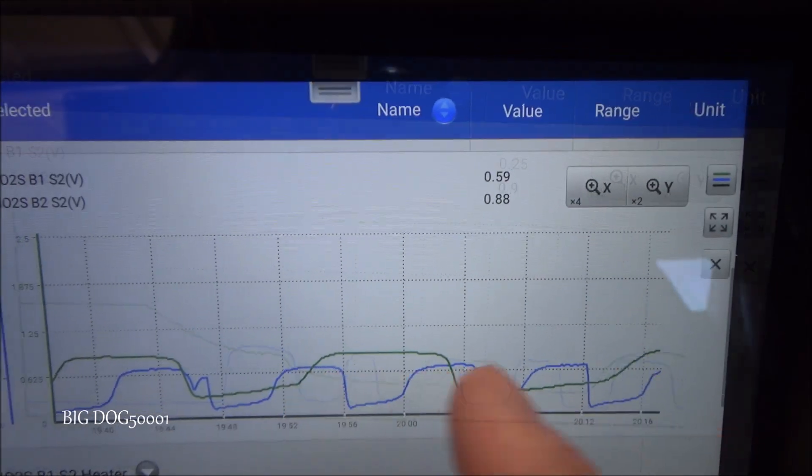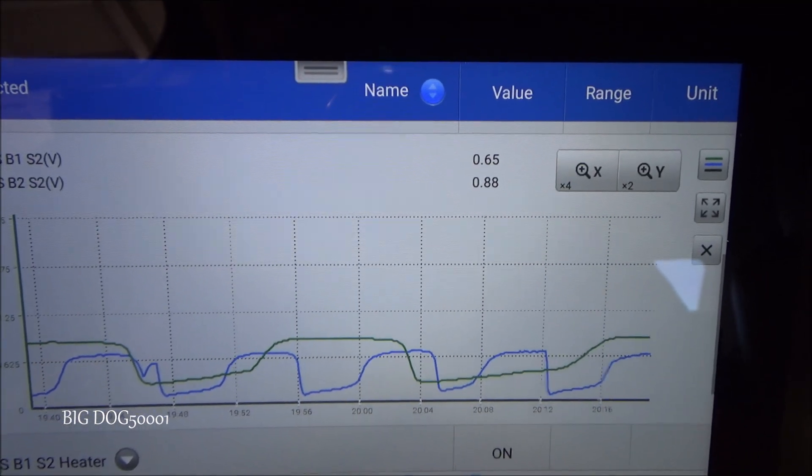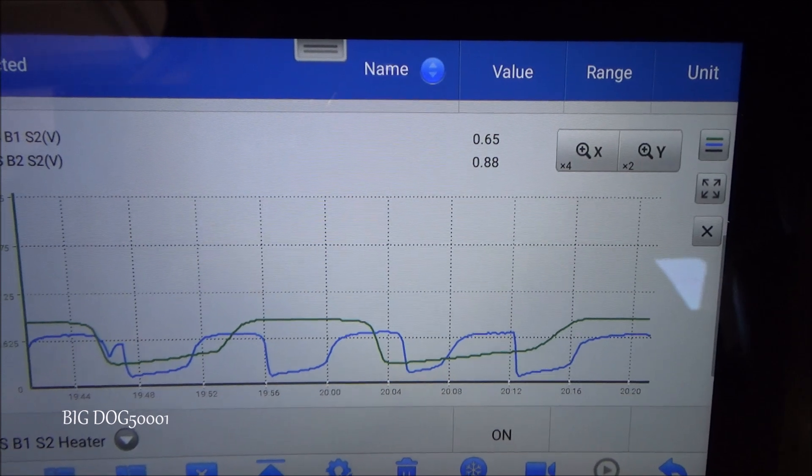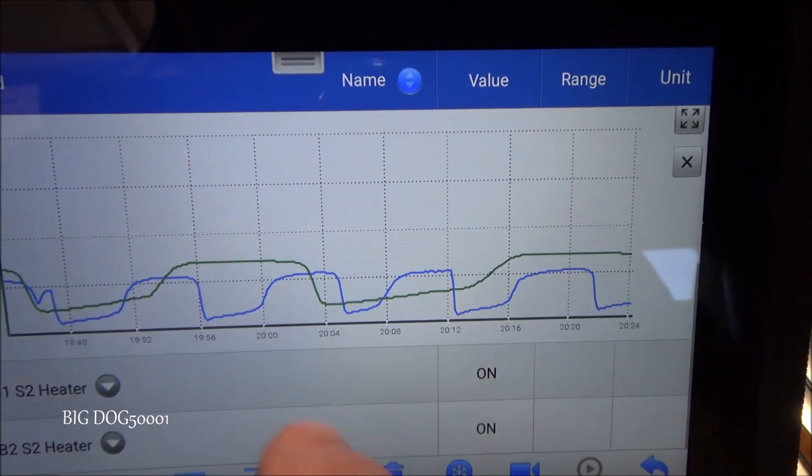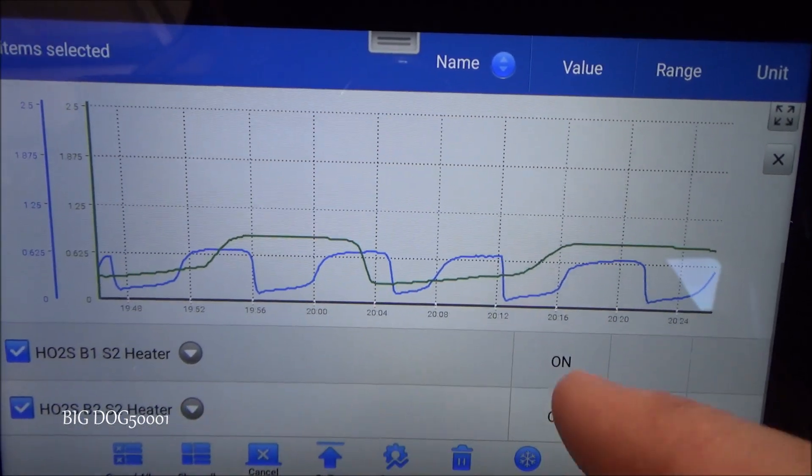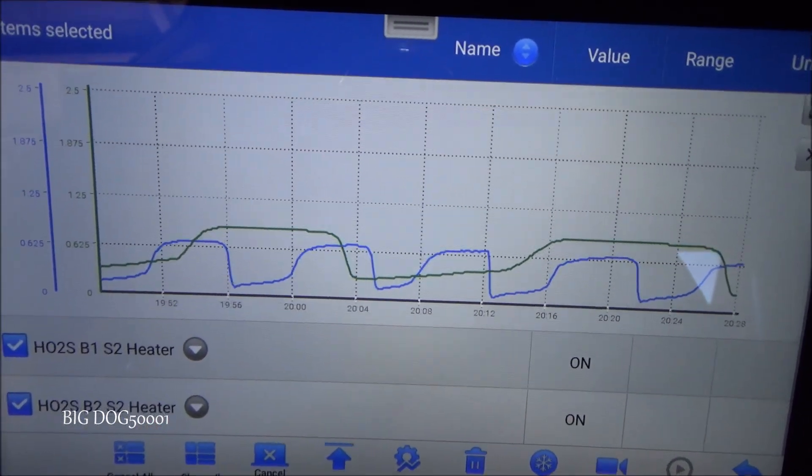But I can definitely see a pattern where it's much more sluggish than our other oxygen sensor. Now I'm going to look at the data pids for the heater. I pulled up the wrong ones. And we'll look at the ones for amperage.